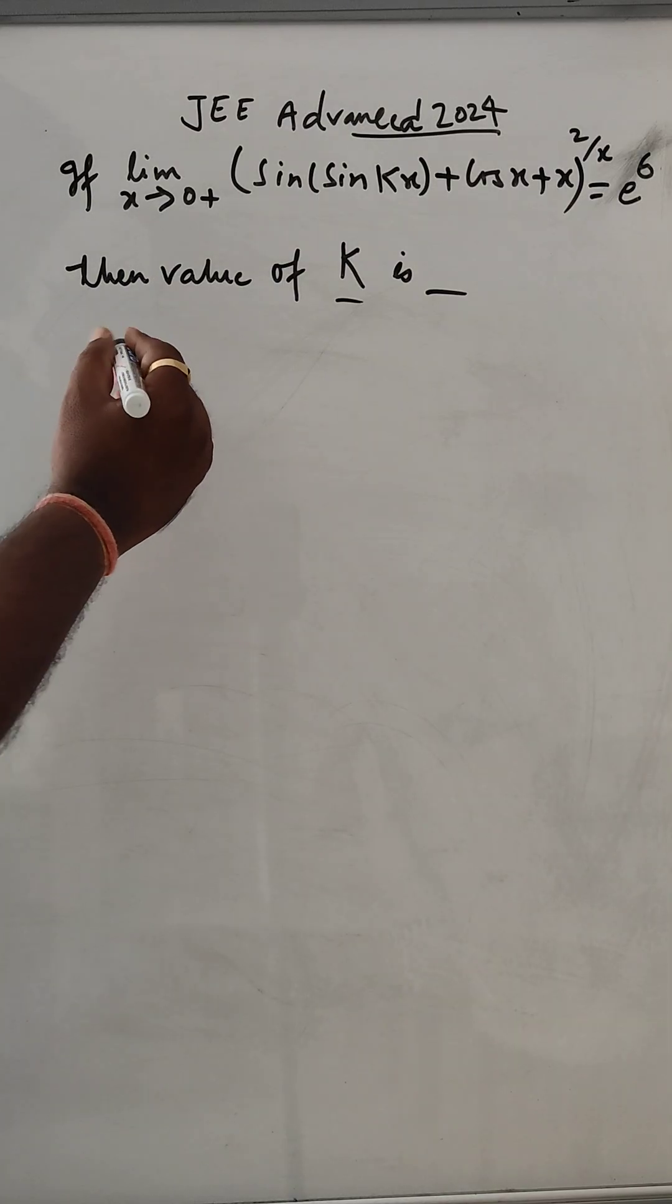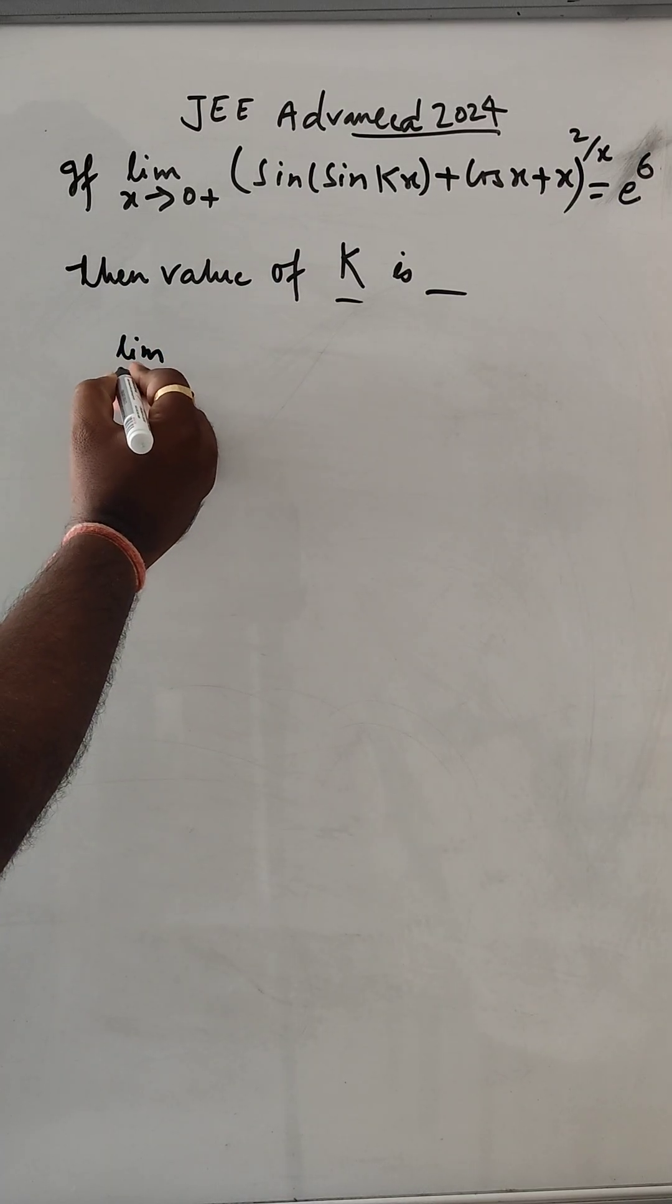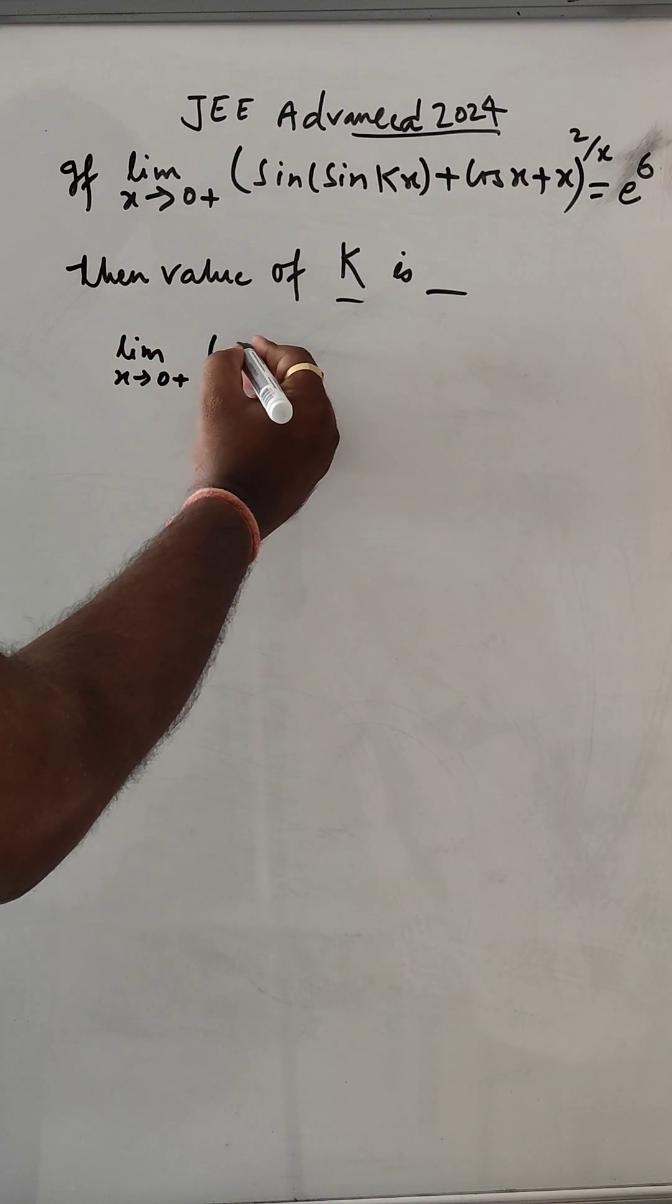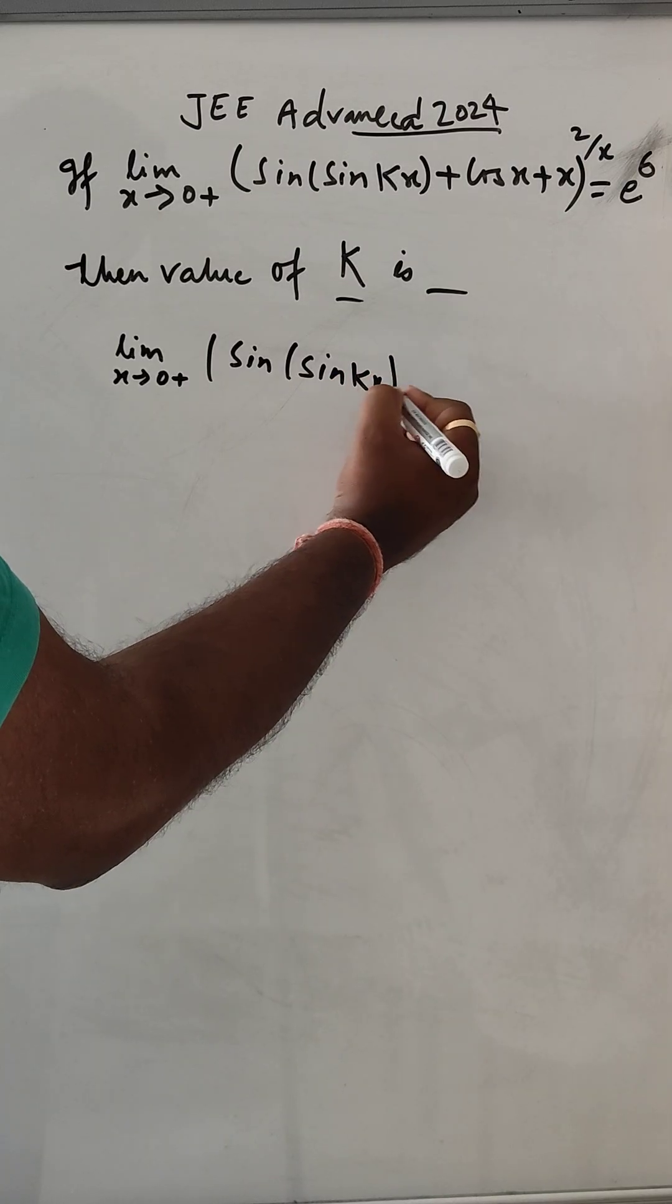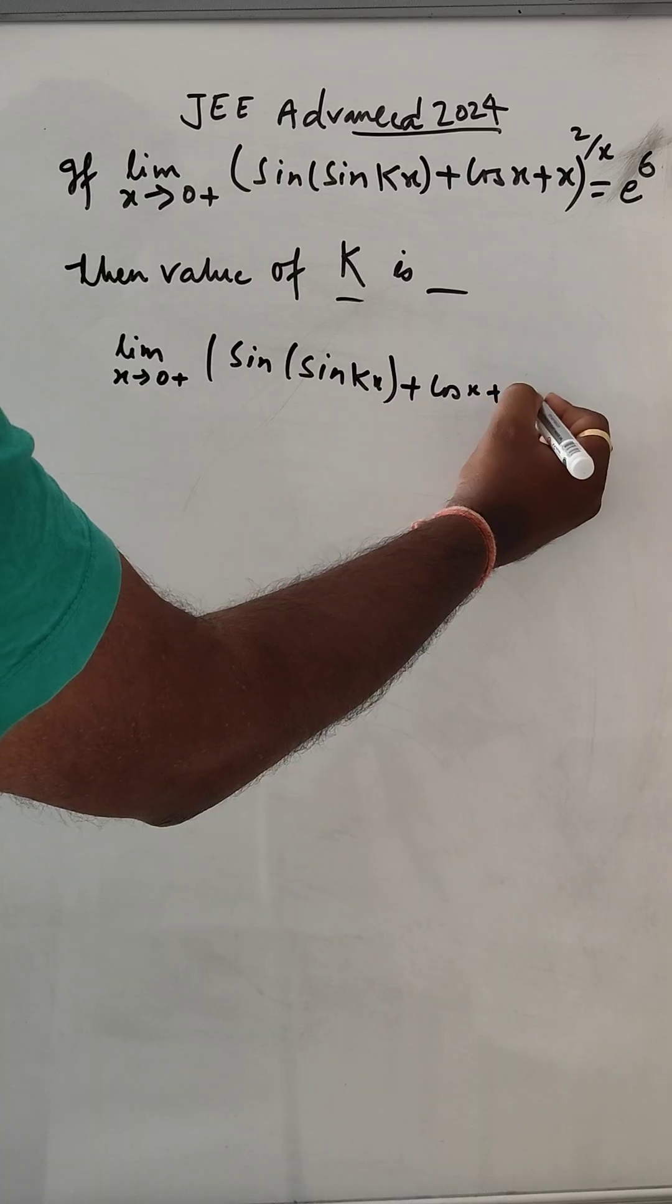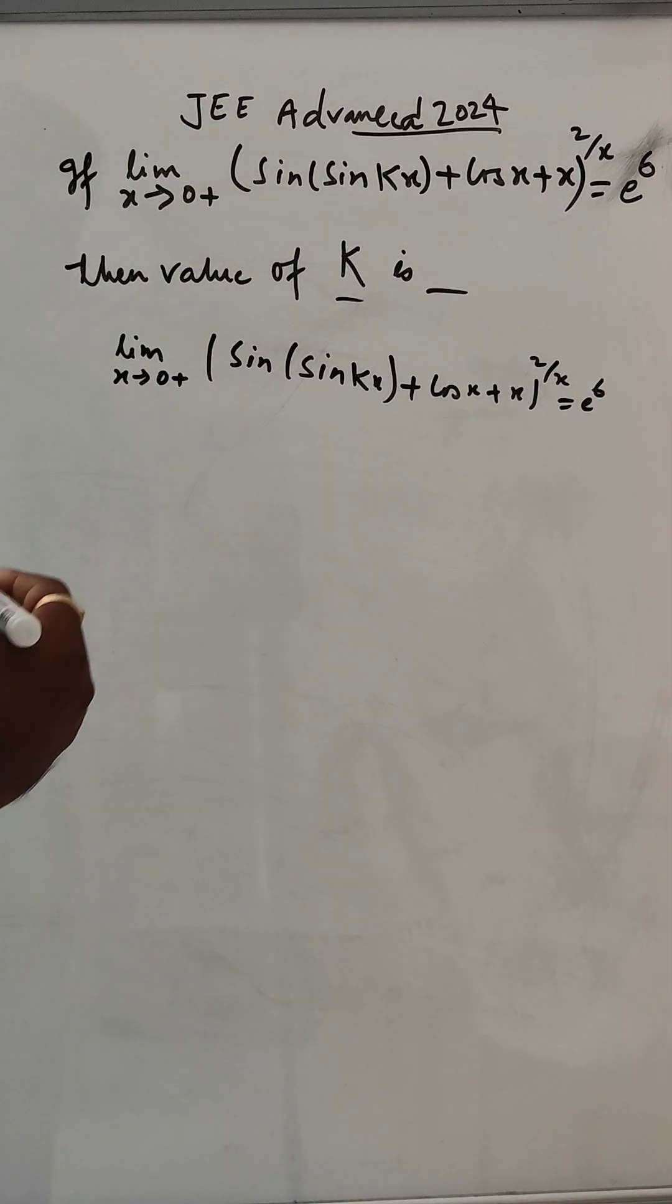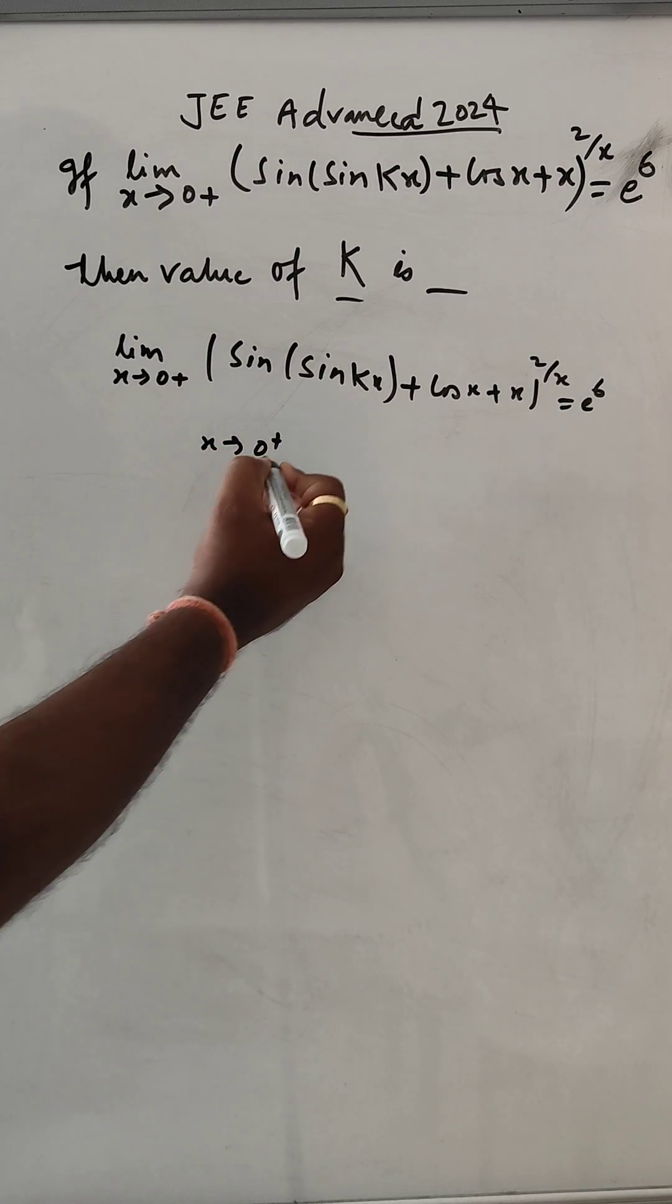The problem looks complex but it is very easy. Let's start: limit x tends to 0. When x tends to 0, almost 0, in that case sine θ will be almost equal to θ.